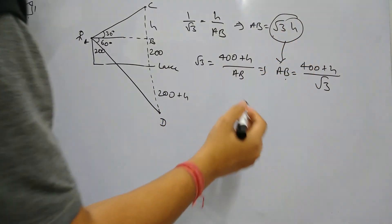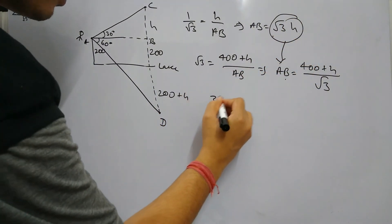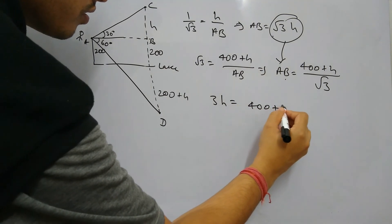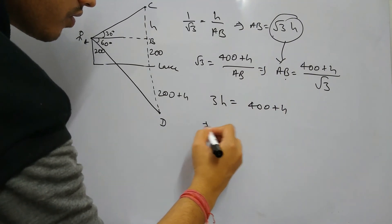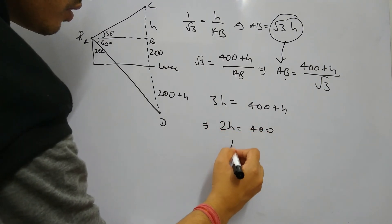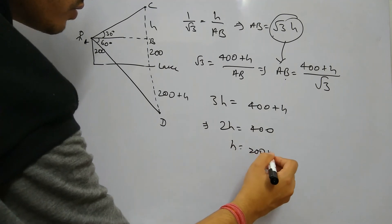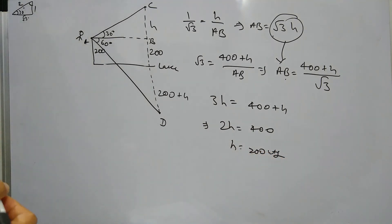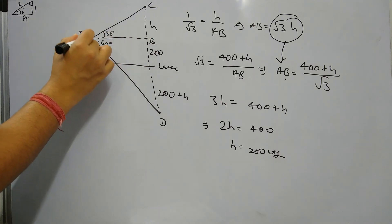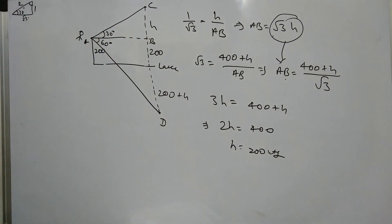So if we put this value of AB here, it becomes 3h equals 400 plus h. So 2h is 400, hence h will be 200 meters. So the height of this cloud from the point of observation is 200 meters.